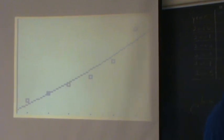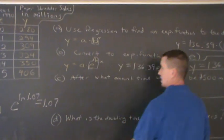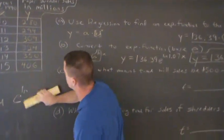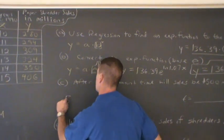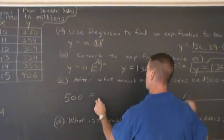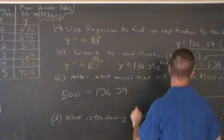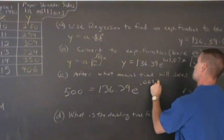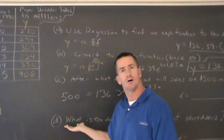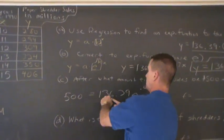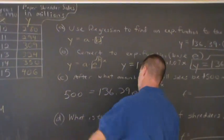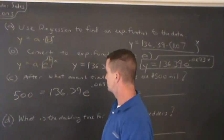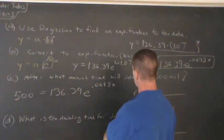So we're gonna answer these questions using the skills you've learned throughout this whole chapter. After what amount of time will sales be 500 million? What I'm gonna have to solve is this equation. 500 million equals 136.39 million e to the .0693 x. And you probably recall from the work you've done in this chapter, we divide this on both sides, we take the natural log of both sides, and eventually we divide this .0693 and we can solve for x. And that would be our time. That's gonna be the time we find.